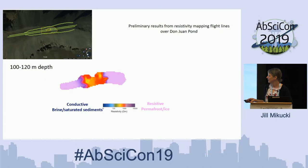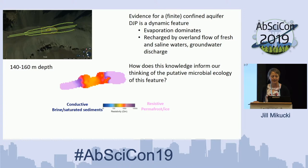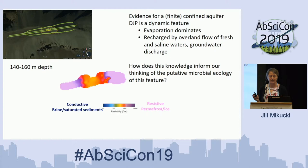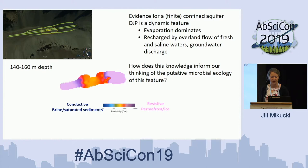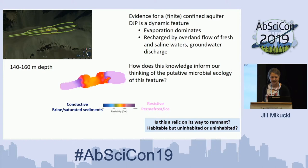In conclusion on the Don Juan Pond piece — there's evidence for a finite confined aquifer; it's not extensive, but it's there. Don Juan Pond is a dynamic feature where evaporation seems to dominate, with evidence for recharge via water track features, a rock glacier contributing fresh water, and groundwater potentially recharging the system. This raises the question: are you interested in what accumulates at the surface, the subsurface brine that feeds it, or the communities in the water tracks? Is this a relic feature on its way to being remnant — habitable but uninhabited?